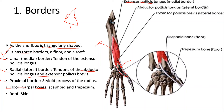Now let's see the floor. The floor is formed by two carpal bones — the scaphoid bone and the trapezium bone. So the floor is made up of the scaphoid and the trapezium.